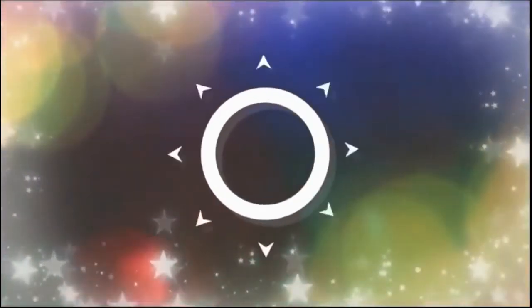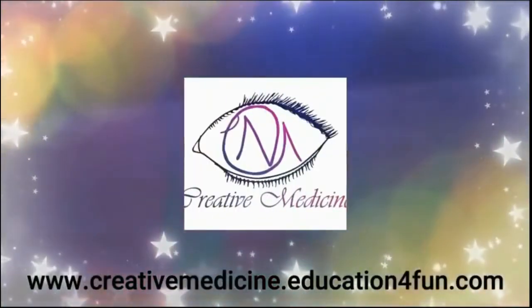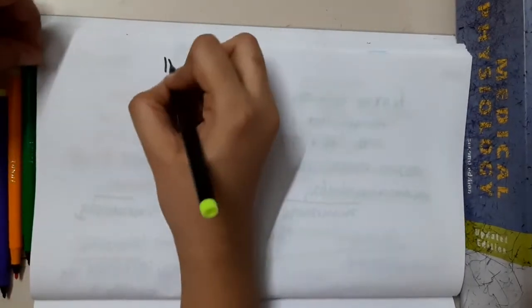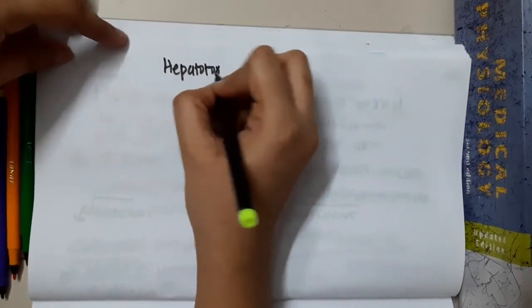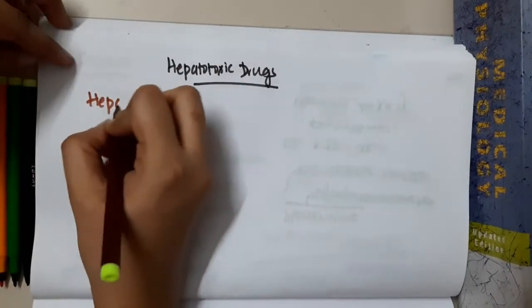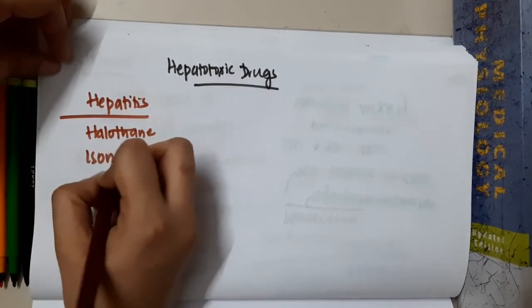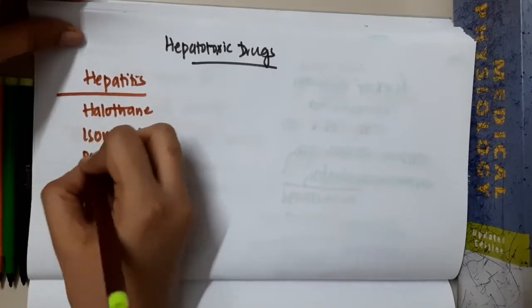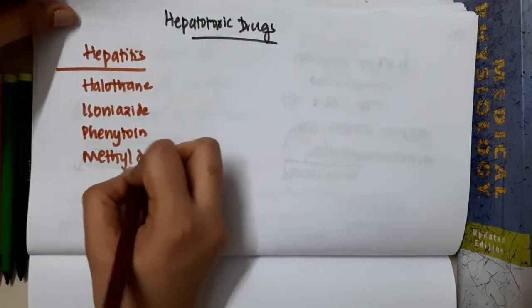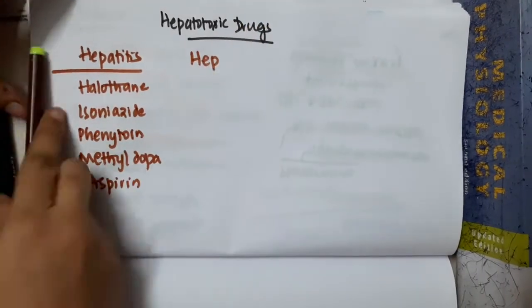Hello friends, welcome to Creative Medicine. In this lecture we will learn about the list of hepatotoxic drugs. Hepatitis causing drugs are halothane, isoniazid, phenytoin, methyl dopa, and aspirin. These will cause hepatitis.